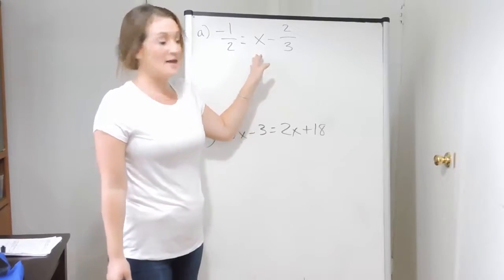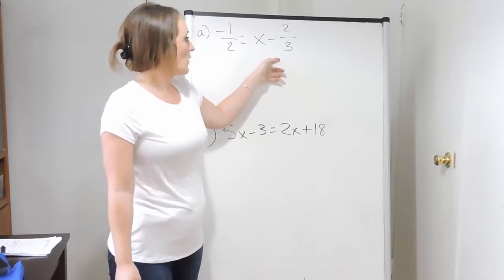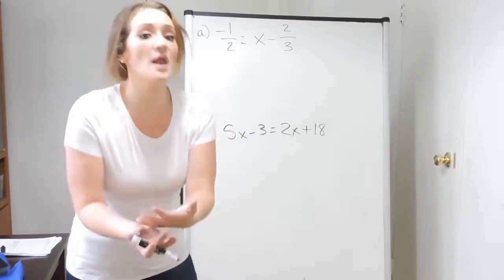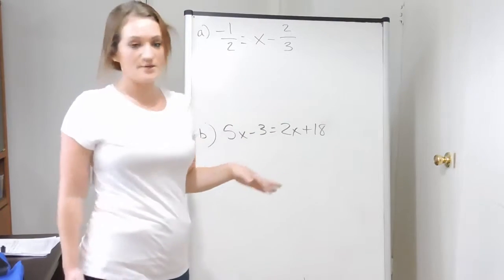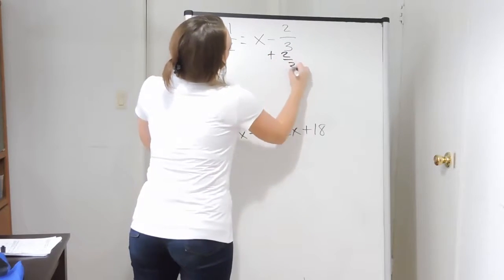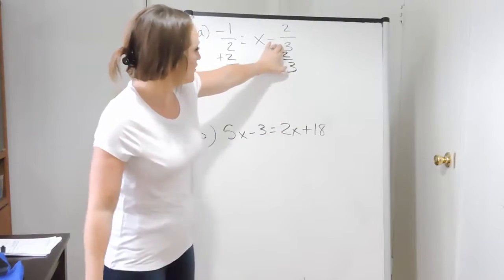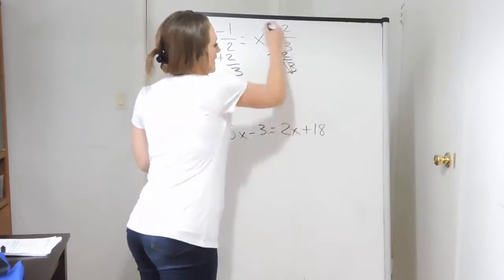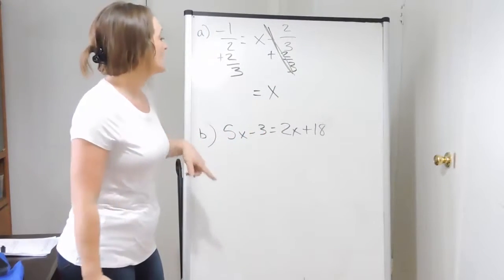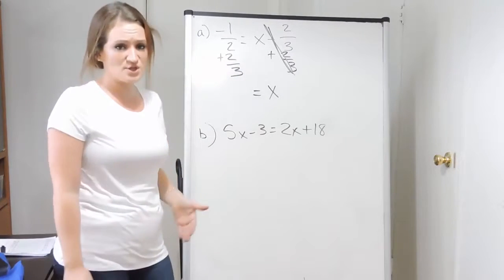Over here, x is on the right-hand side of my equation. Next to the x, I have a minus two thirds. So the opposite of a minus two thirds would be a plus two thirds — that's what I'm going to do. In order to solve for x, I would need to add two thirds to both sides. On the right-hand side, a negative two thirds plus two thirds is going to cancel, leaving x all by itself. But over here on the left-hand side, I had a negative one half and I'm adding two thirds to it.